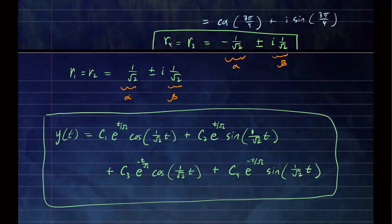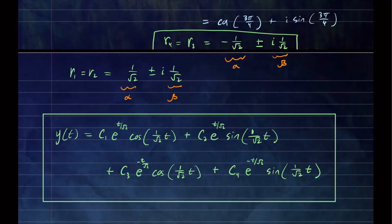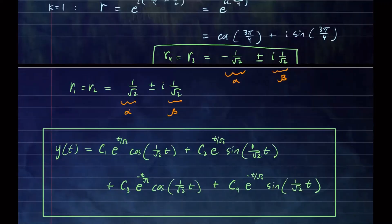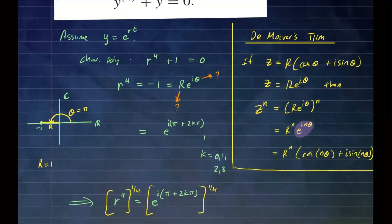This is how you compute solutions to higher order differential equations when the roots are complex, or when you can write the differential equation so that some variable to a power equals a number that can be represented as a polar complex number.